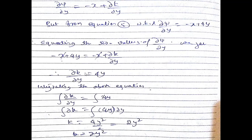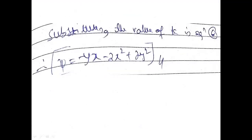To find k, I integrate: integrating ∂k/∂y = 4y with respect to y gives k = 4y²/2 = 2y². Substituting this value into equation number six, the stream function is: ψ = -yx - 2x² + 2y². This is the final form of the stream function. Thank you.